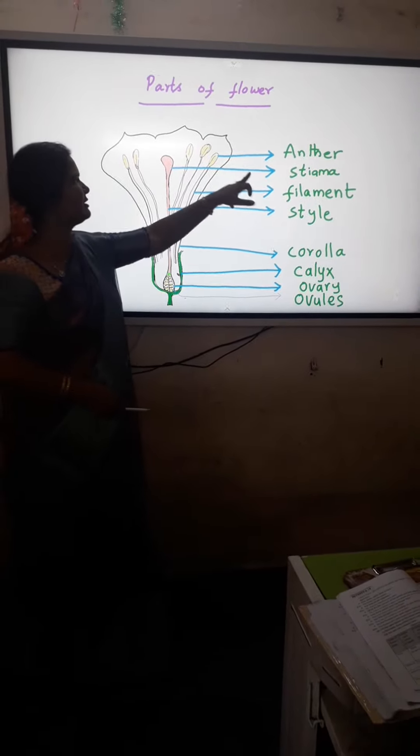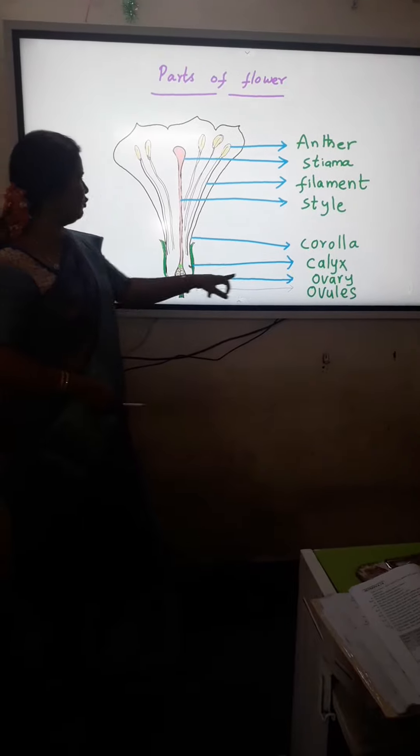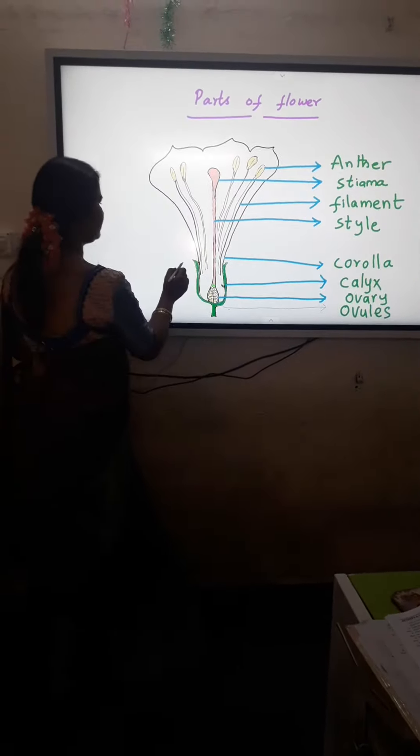And there are many parts: style, filament, stigma, ovary, and ovules. But these are the small parts.